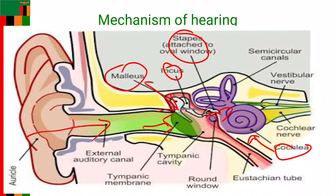When you look at the cochlea itself, it has two ends. The end which looks like a snail helps to detect high-pitched sound — for example, when an infant is crying, that particular sound will be detected by this portion of the cochlea. Then we have the portion of the cochlea that is closer to the three bones, and these ones detect lower-pitched sound, such as a large dog barking.